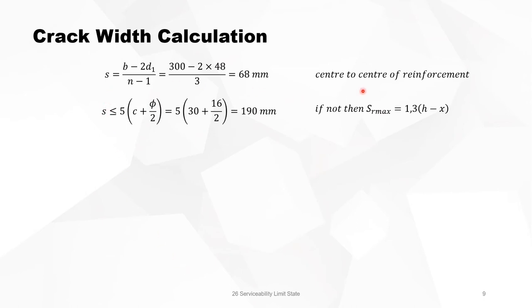The center to center of the reinforcement: we have 4 diameters 16, so the center to center is 68 millimeters. If the center to center is smaller than 5 times the concrete cover plus half the diameter, smaller than 190, and if this is not the case, then SRmax is 1.3 times h minus x. 86 is smaller than 190, so we use the regular formula for SRmax, and we arrive at 224 millimeters.